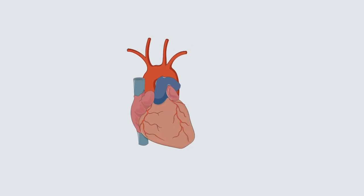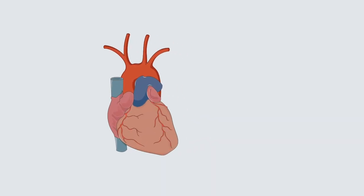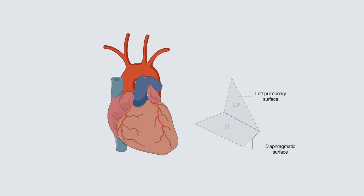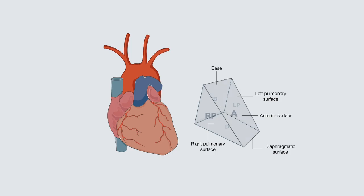When looking at the heart, it is important to note the different surfaces. Inferiorly is the diaphragmatic surface, as it is in contact with the diaphragm. Laterally is the left pulmonary surface, which is in contact with the left lung. Posteriorly is the base of the heart — this is the right pulmonary surface. And lastly, the anterior surface of the heart.